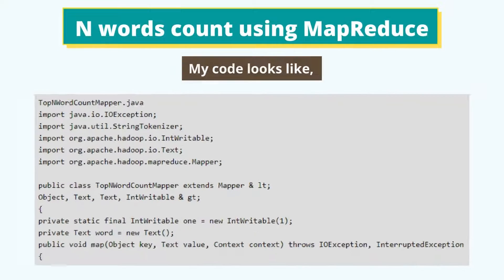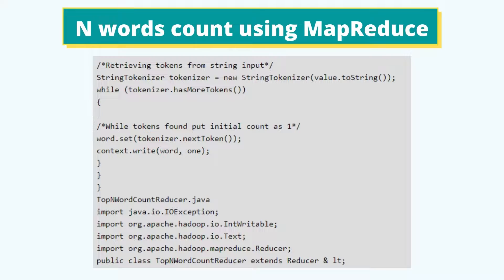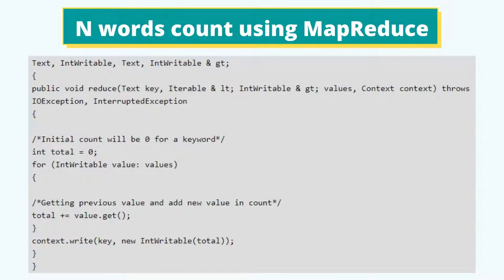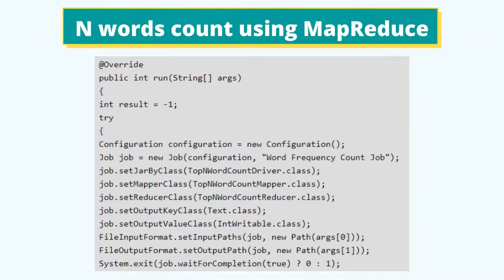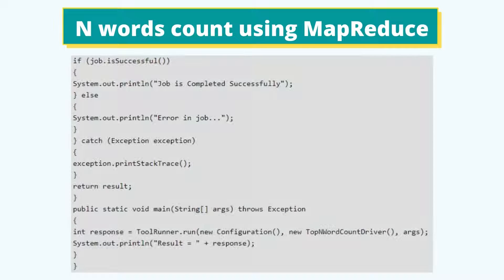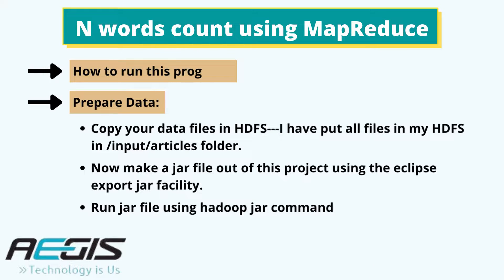I will give a detailed explanation of this program and how to run it at the end of this video. In this image code, most of the code is self-explanatory, so you can easily check and get a line-by-line understanding. We are extracting data from the text file using the mapper class TopAndWordCountMapper.java, and counting the total of a particular word using the reducer class TopAndWordCountReducer.java.